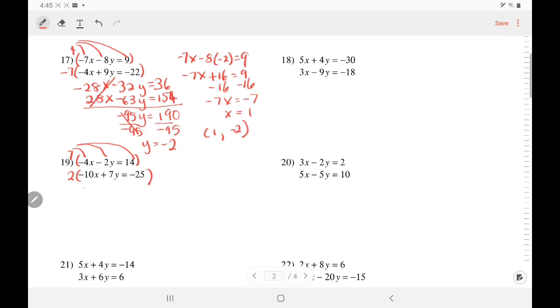Distribute. 7 times negative 4 is negative 28x. 7 times negative 2 is negative 14y equals 7 times 14 is 98. Distribute the negative 2 to get negative 20x plus 14y equals negative 50. Add them. The y's will eliminate because they're opposites. Add these. So negative 48x equals 48. Divide. x equals negative 1.